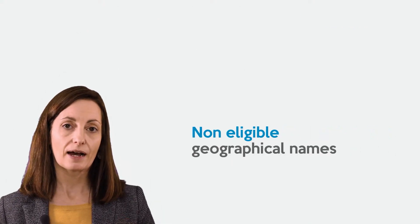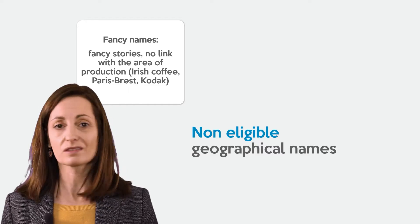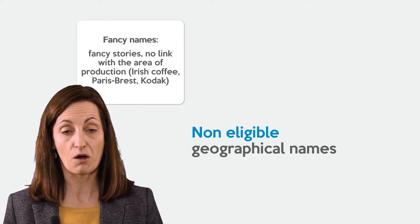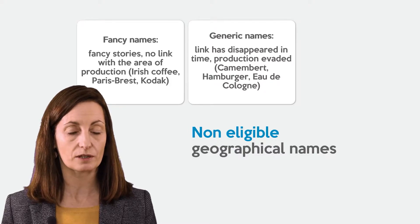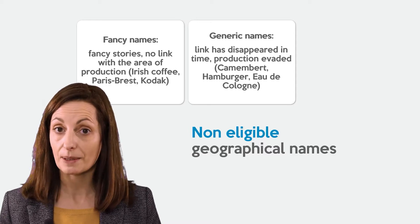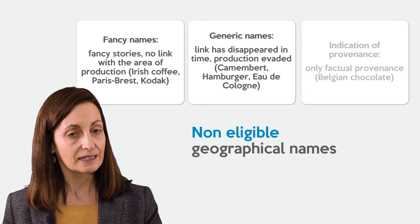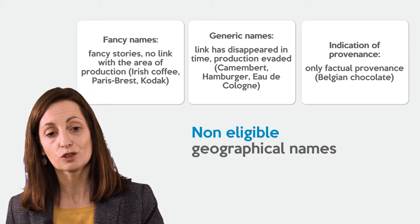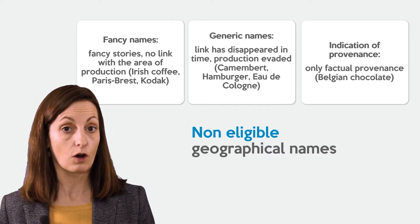What geographical names are not eligible? First of all, fancy names — meaning fancy stories with no link to the geographical area of production, such as Irish coffee or Paris-Brest. We also have generic names, where the link has totally disappeared over time and the product can be made elsewhere, such as Camembert, Hamburger, or Eau de Cologne. The indication of provenance is only the factual provenance of the product, such as Belgian chocolate or made in China.